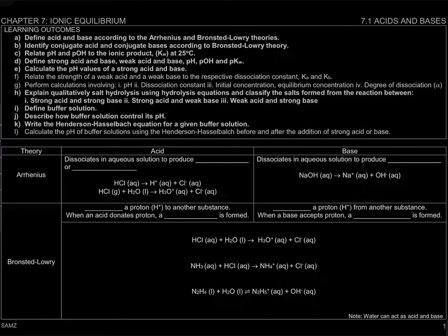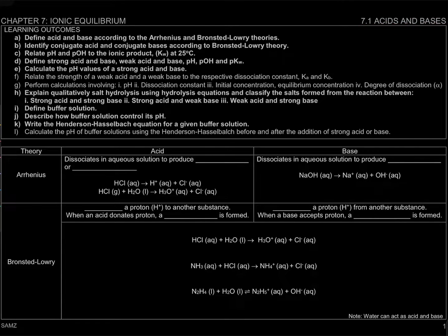Hi everyone. Today we're going to learn a new chapter — Chapter 7, Ionic Equilibrium. In section 7.1, we'll look at acids and bases. There are actually lots of learning outcomes, but for today what we're going to learn is how to define acid and base according to the Arrhenius and Bronsted-Lowry theories.